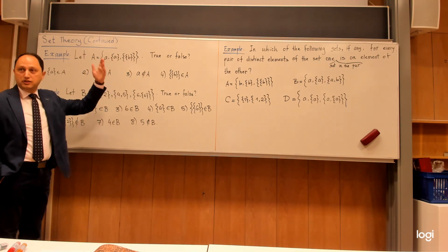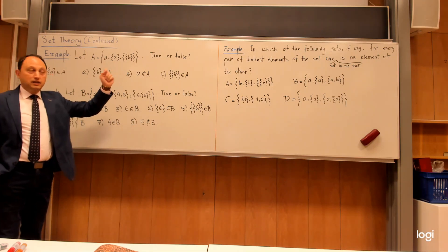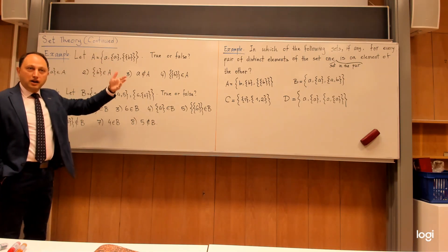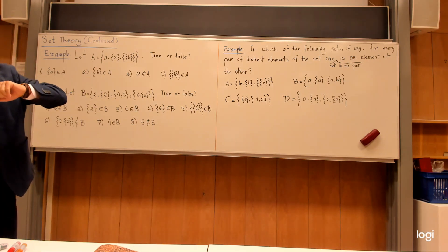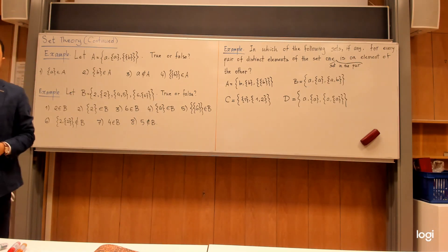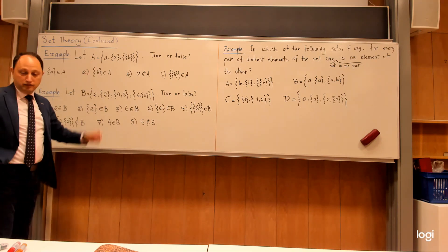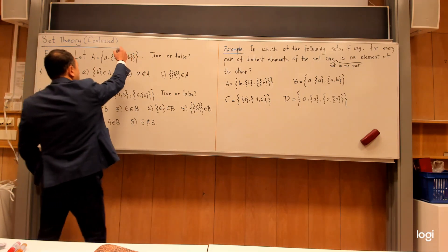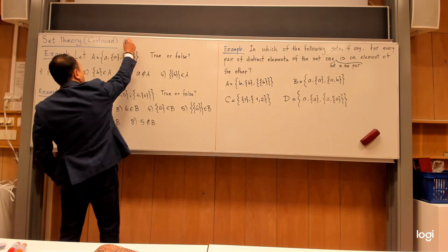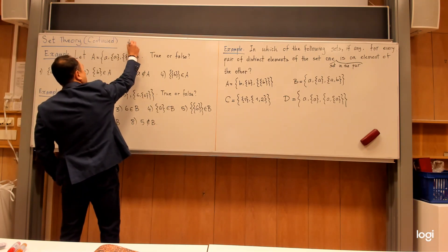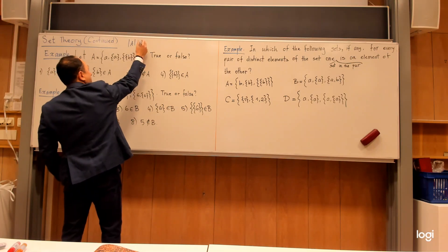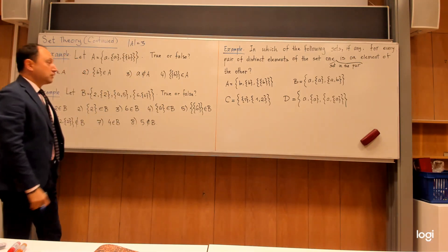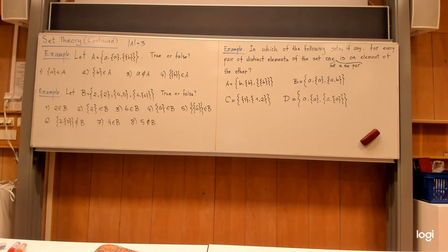This set is called a finite set because we can count the number of elements inside, and that number is called the cardinality of the set. To show the cardinality is three, I use these symbols — very similar to absolute value — and write three in front.